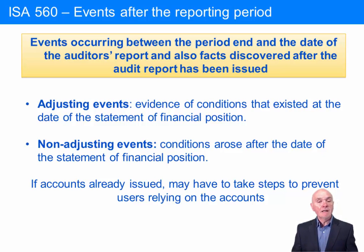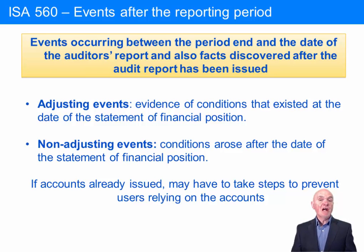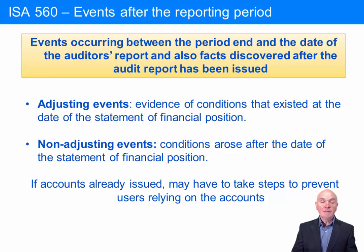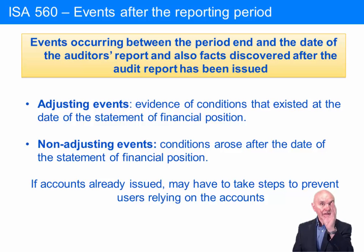The second category is non-adjusting events — conditions which entirely arose after the date of the statement of financial position. For example, on the 15th of January your factory burns down. At the 31st of December your factory was completely healthy; it was standing there with no smoke coming out of it, but then two weeks later it burns down. That is a non-adjusting event. On the balance sheet at the 31st of December you would show the factory at its cost less depreciation — it's a perfectly healthy asset that existed and was owned at the time.